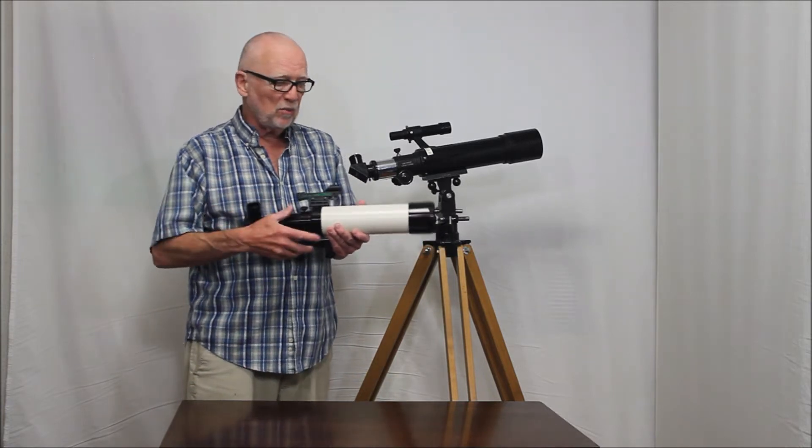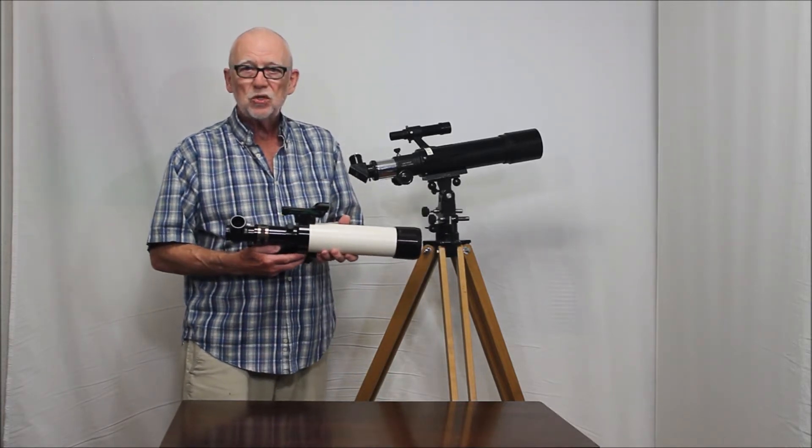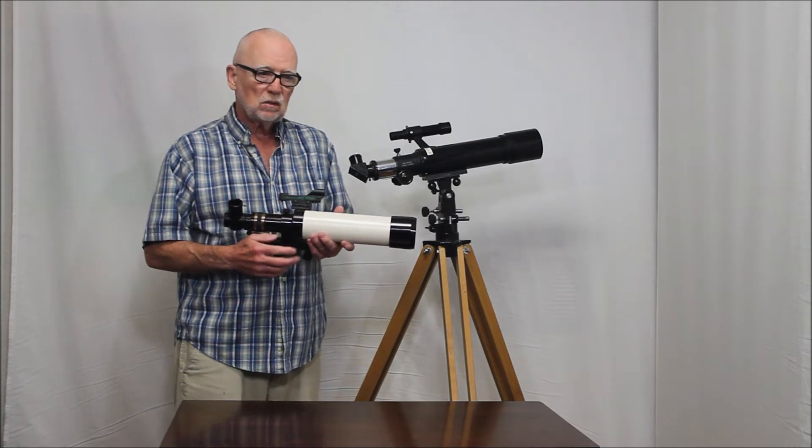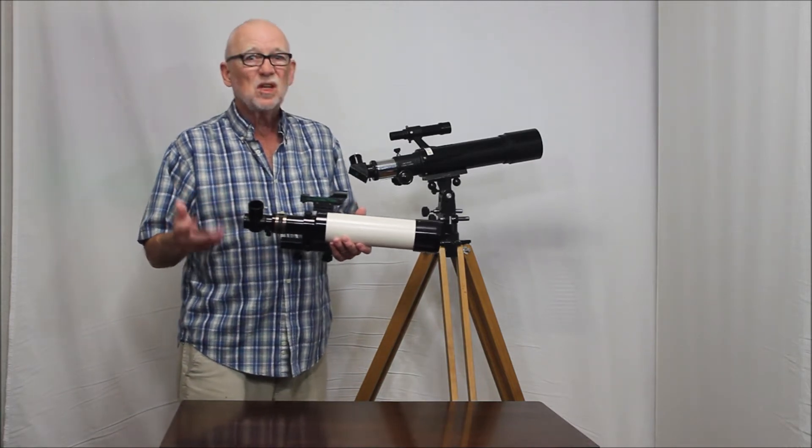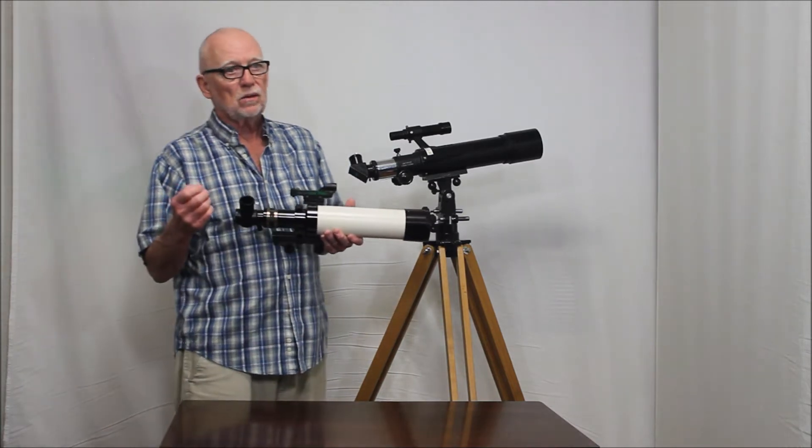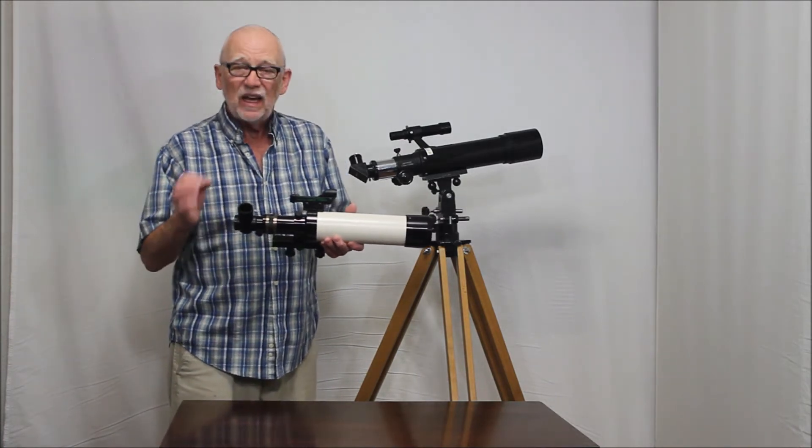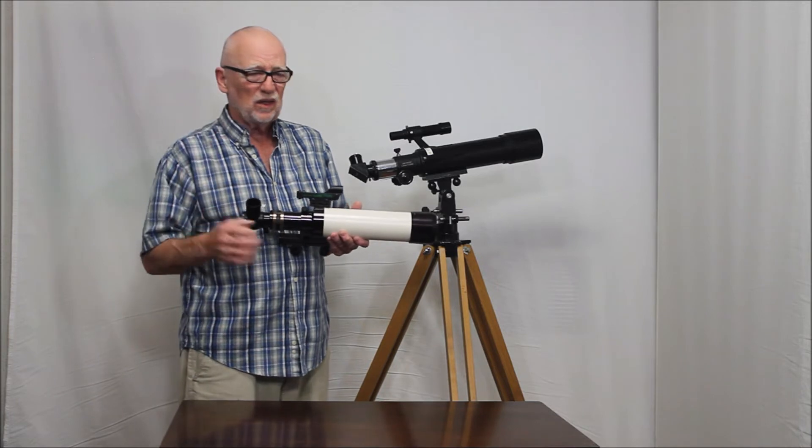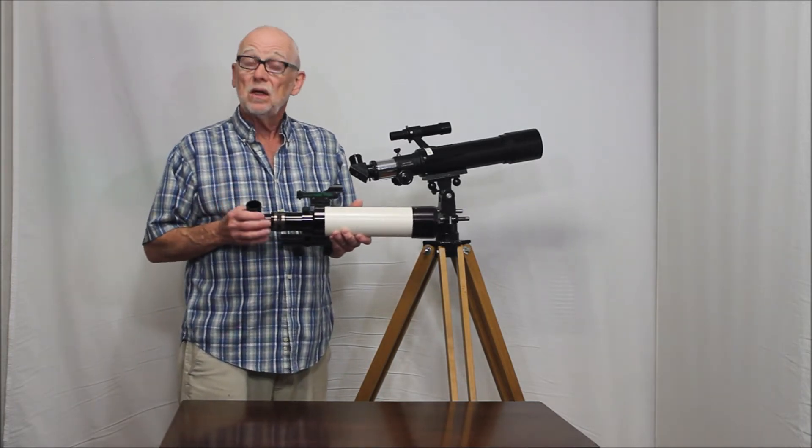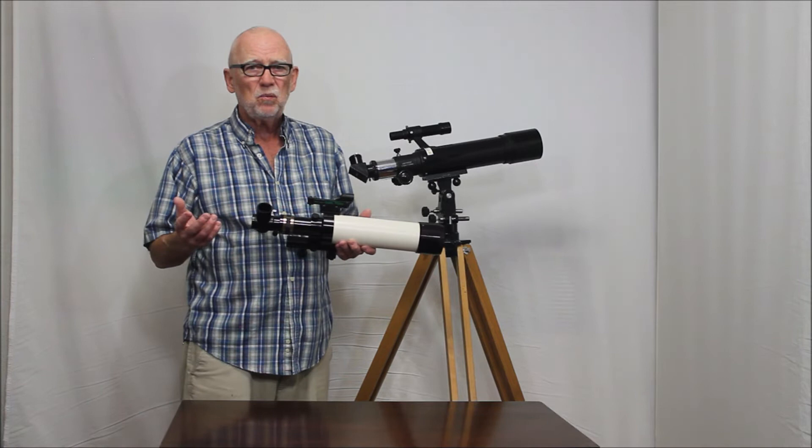Anyway, these two scopes both performed beautifully at around 150 power. Wonderful scopes. Both scopes have a little bit of color. The Teleview Ranger is a semi-apochromat or ED achromat, something like that. Anyway, it's got a little bit of color in it. Not bad. Not objectionable. I guess that's the main point.